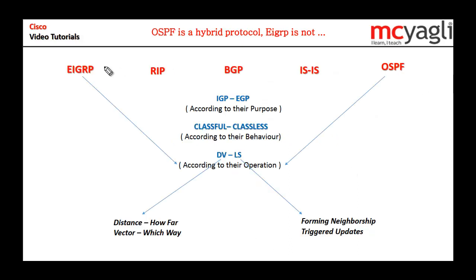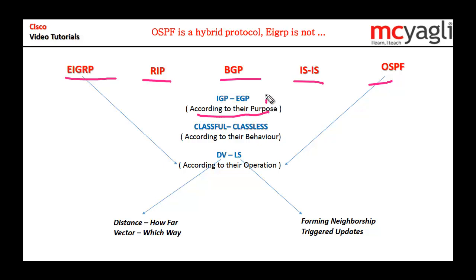Now let's move to routing protocols. I have the names of five routing protocols here: EIGRP, BGP, ISIS, and OSPF. We could classify them according to their purpose — they can be either EGP or IGP — or we could classify them according to their behavior — they can be classless or classful — or we could classify them according to their operation — they can be either link state or distance vector.